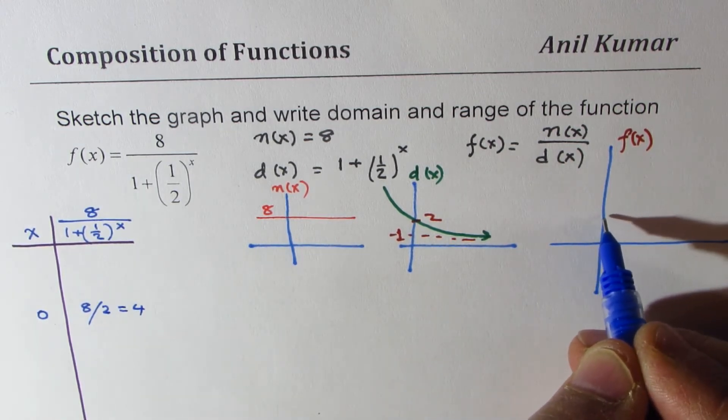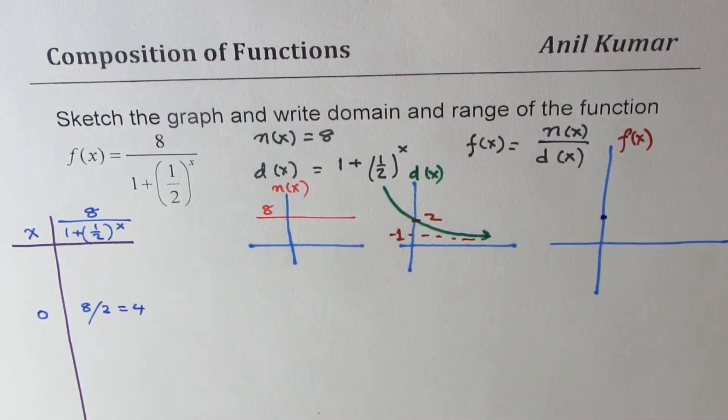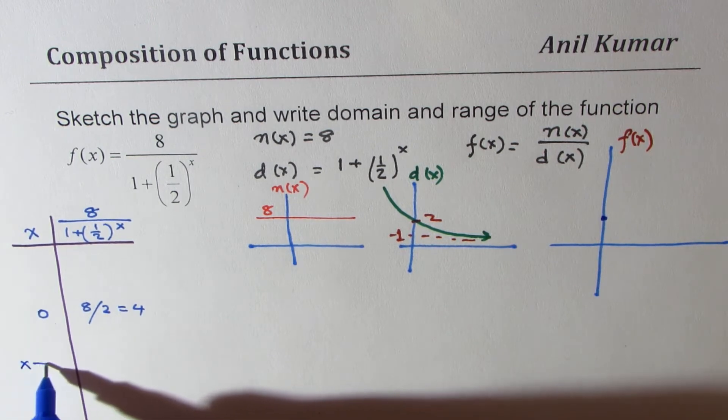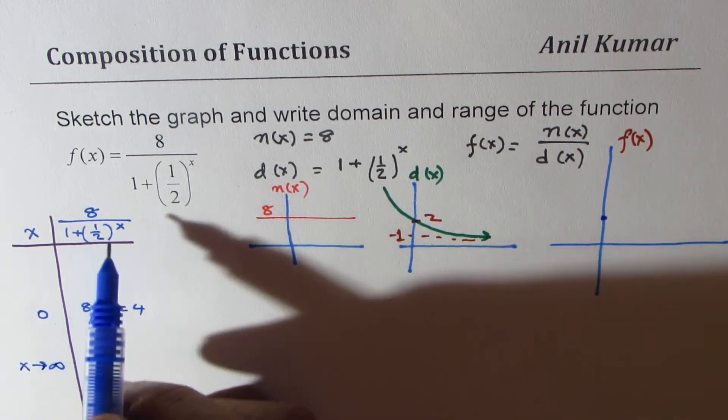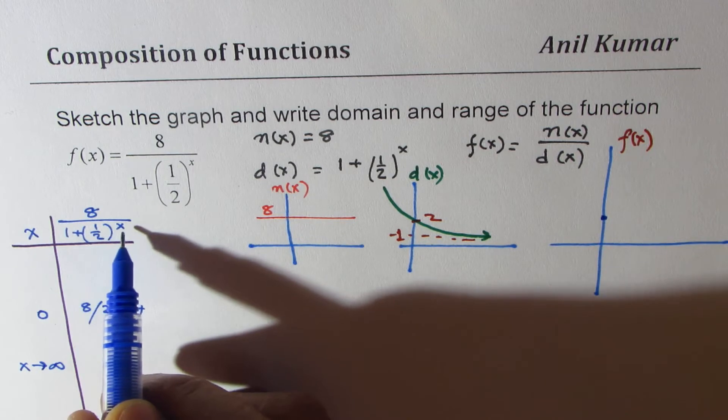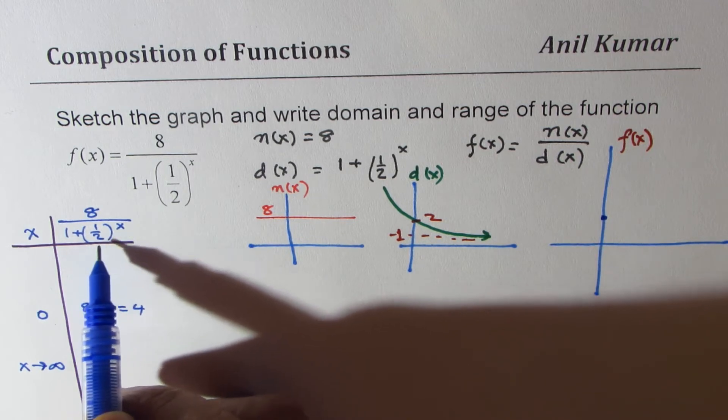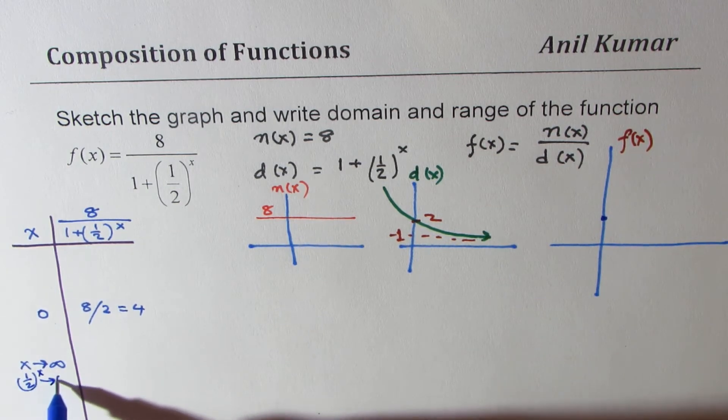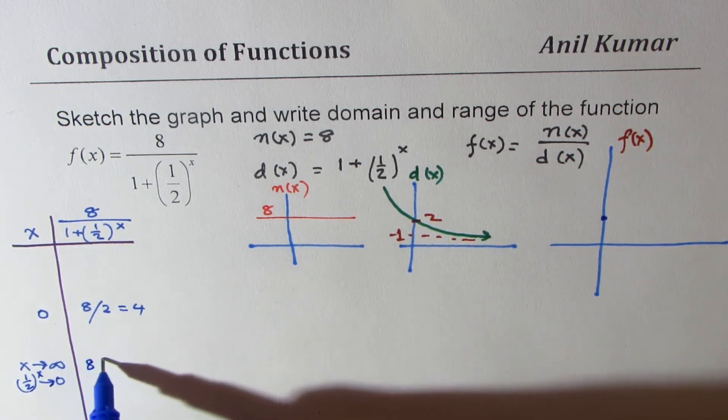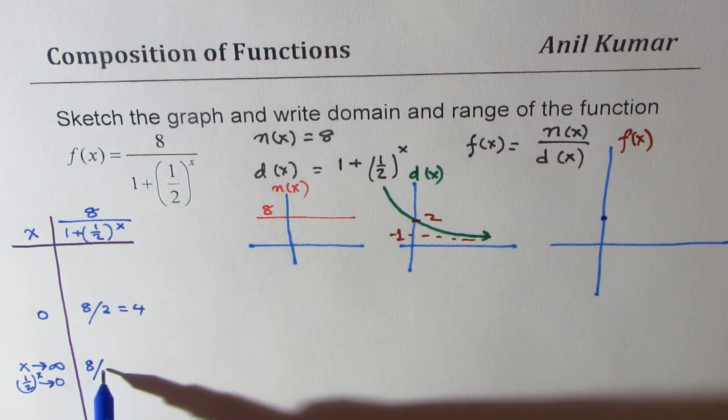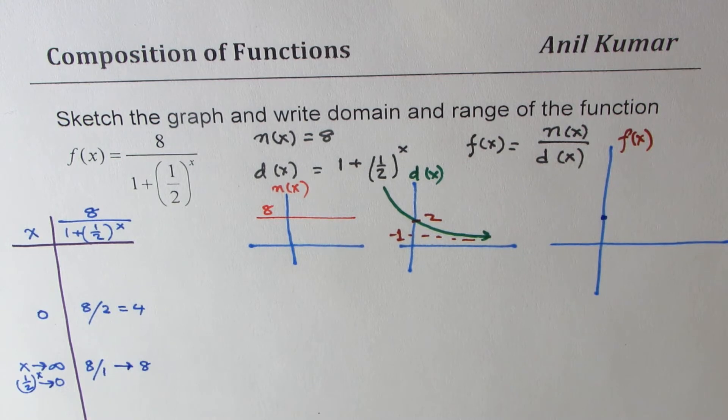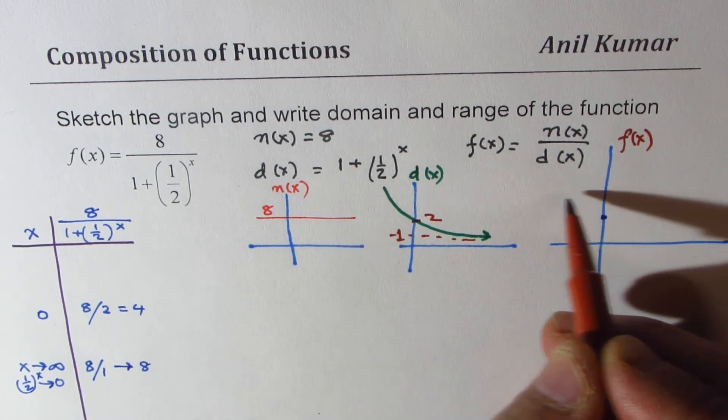Now if I have a value of x which is infinitely large, x is approaching infinitely large, in that case what happens is 1 over half to the power of x approaches 0, so we get this as 8 divided by 1, it is approaching 8. So that means we do have a horizontal asymptote at 8.